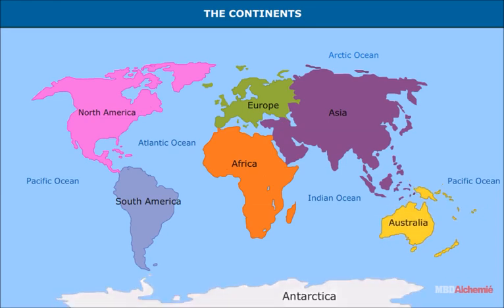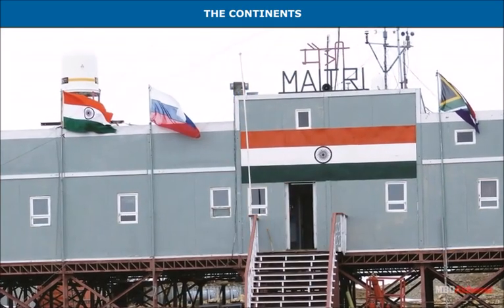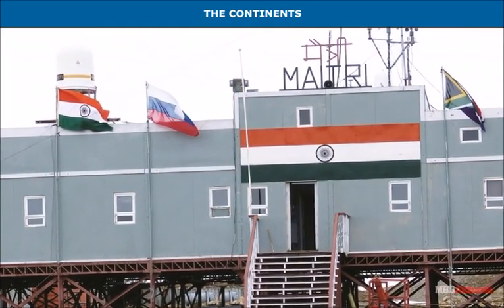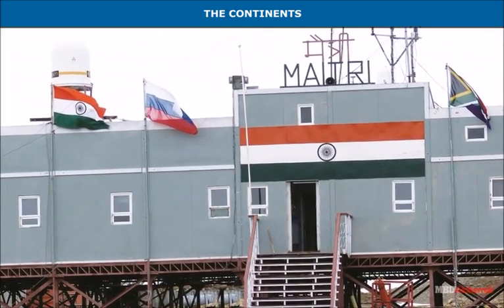Antarctica is the southernmost continent. The South Pole lies at the center of the continent of Antarctica, and it remains covered by deep snow throughout the year. India has set up two research centers here: Maitri and Dakshin Gangotri.